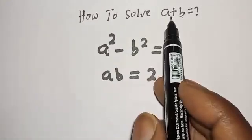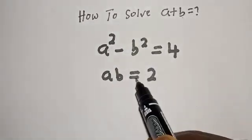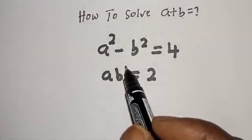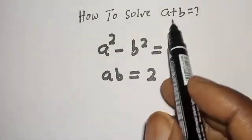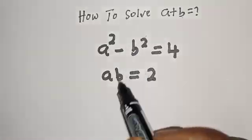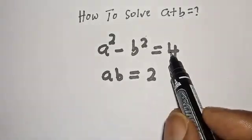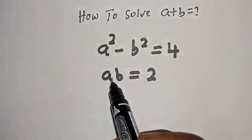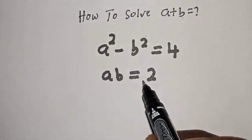How to solve for a plus b in this equation. Hi everyone, welcome to my class. In this class, we want to find the value of a plus b from this given equation: a squared minus b squared is equal to 4, and ab is equal to 2.